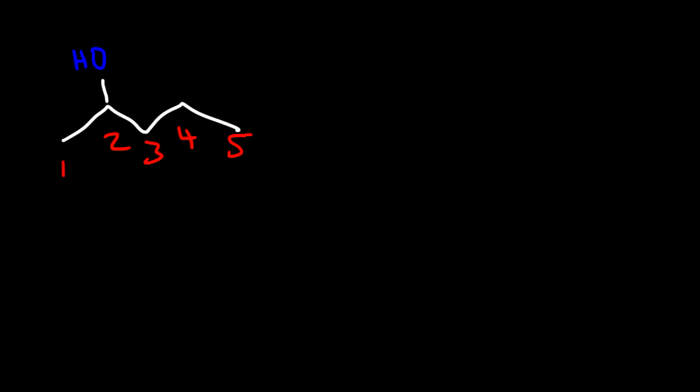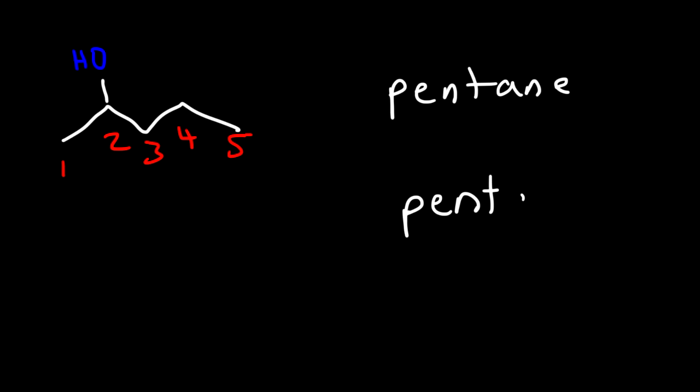Try this example — go ahead and name the alcohol. We have to number it, and the OH group is on carbon two. We have a five-carbon chain, so instead of saying pentane, it's going to be pentanol — particularly 2-pentanol.